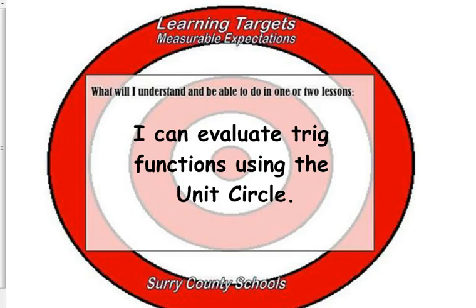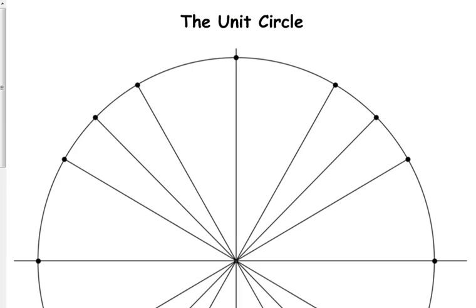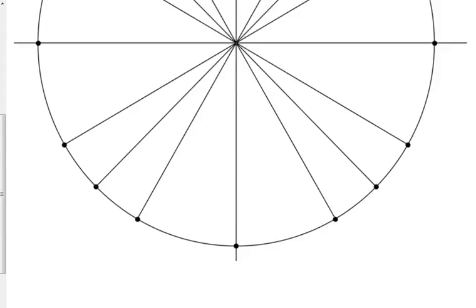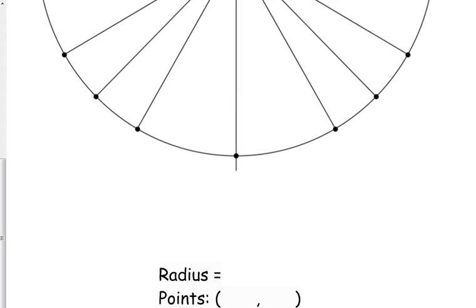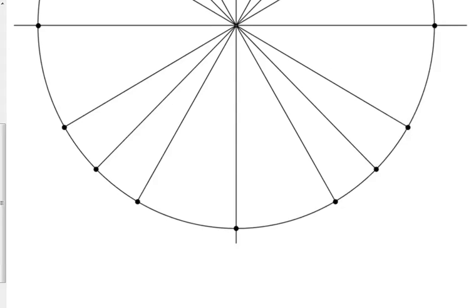We're going to talk about evaluating trig functions. We're going to focus on sine and cosine using our unit circle. The reason why it's called the unit circle is because it has a radius of one.